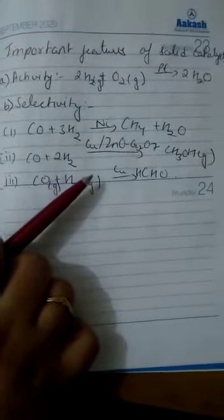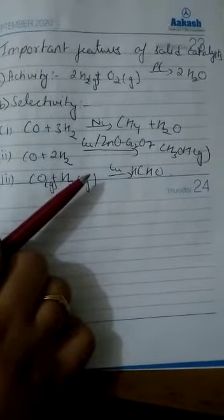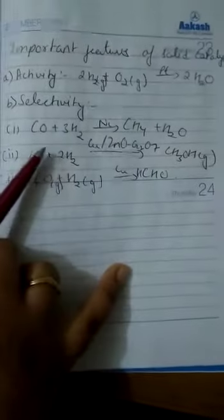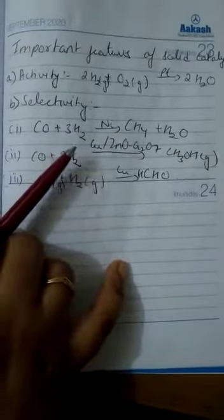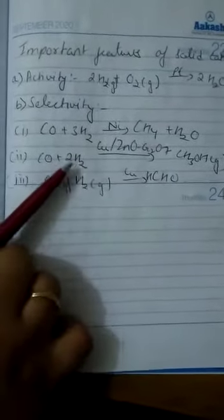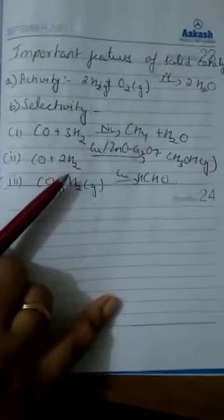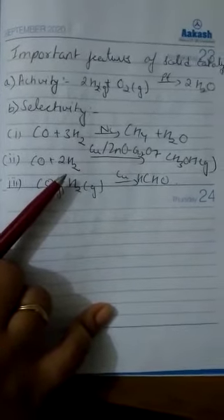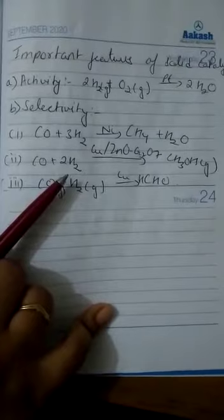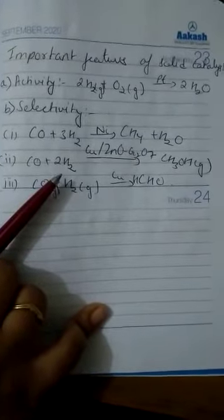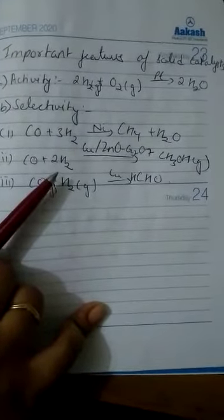The catalyst has the ability to direct the reaction to yield a particular product. That is why it is known as the selectivity of catalytic activity. Thus it can be inferred that the action of a catalyst is highly selective in nature.